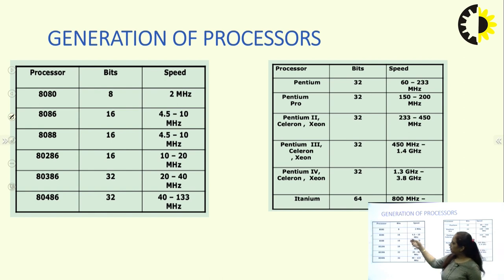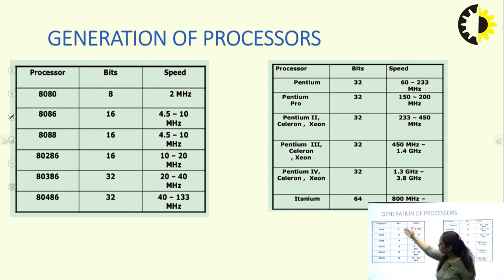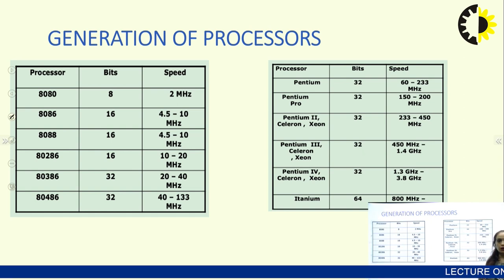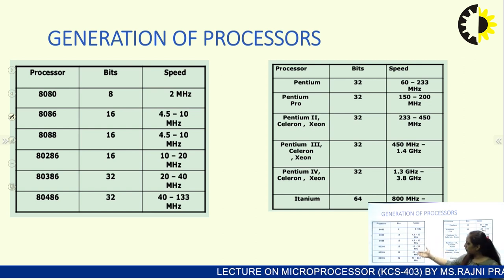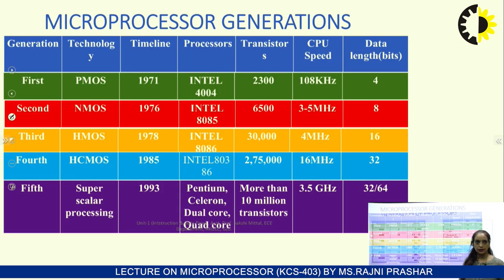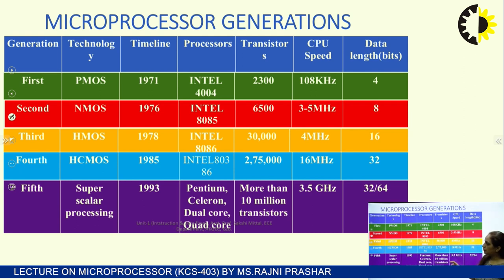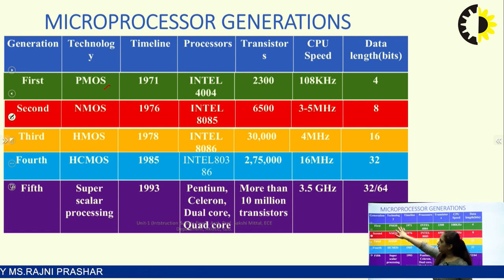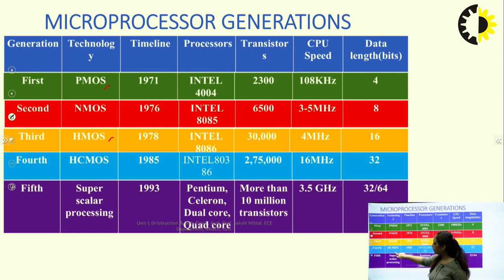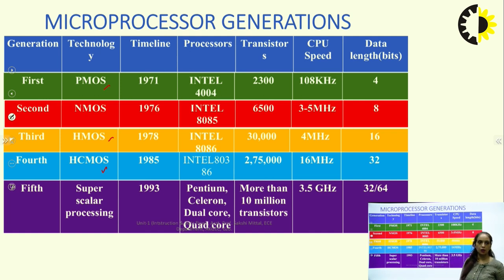Looking at the generational progression: starting from 8080 to 8086, number of bits are increasing and clock speed is increasing — we are processing more and more data. From a technology standpoint, the first generation used PMOS technology, then NMOS technology, then hybrid MOS, then HCMOS (Hybrid Complementary Metal Oxide Semiconductor), and for the fifth generation, super-scaling processing technology is used.